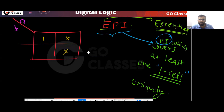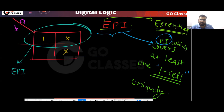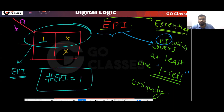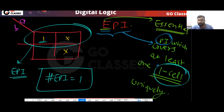So in this example, how many EPAs do you have? There is one EPA, because this prime implicant is covering one 1-cell uniquely. So the number of EPAs is one. The one 1-cell covered uniquely is what matters — that cell must be covered uniquely.